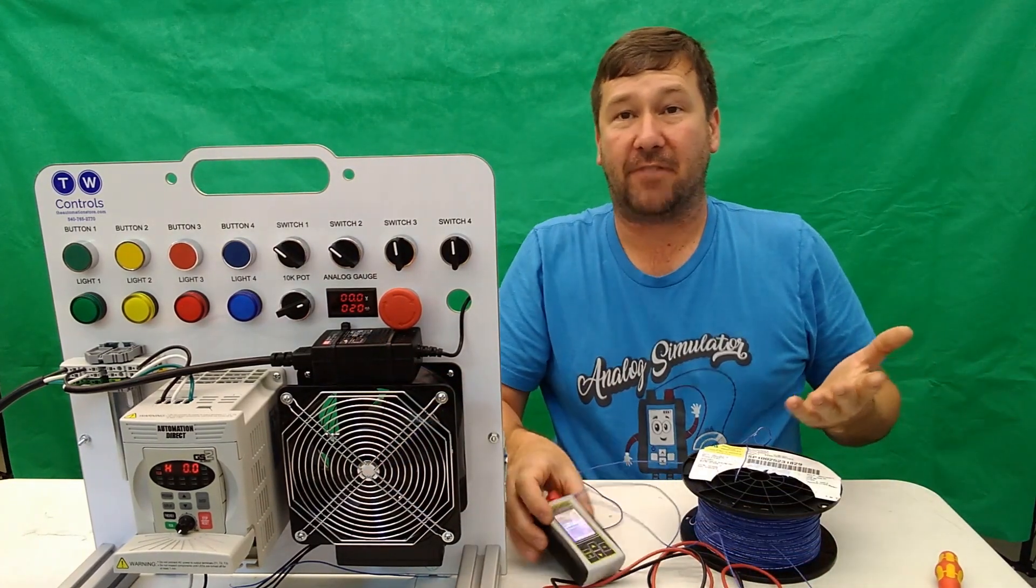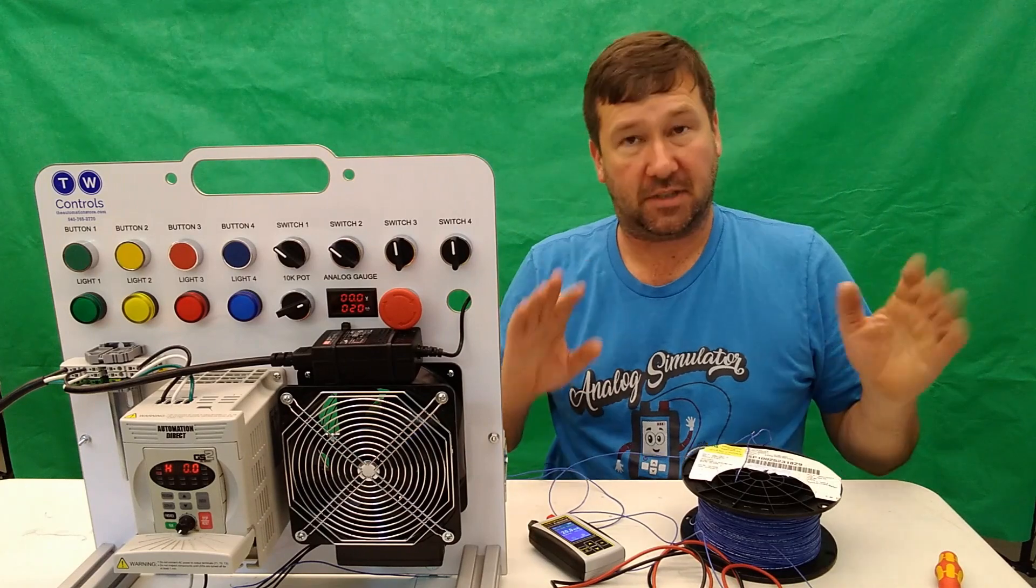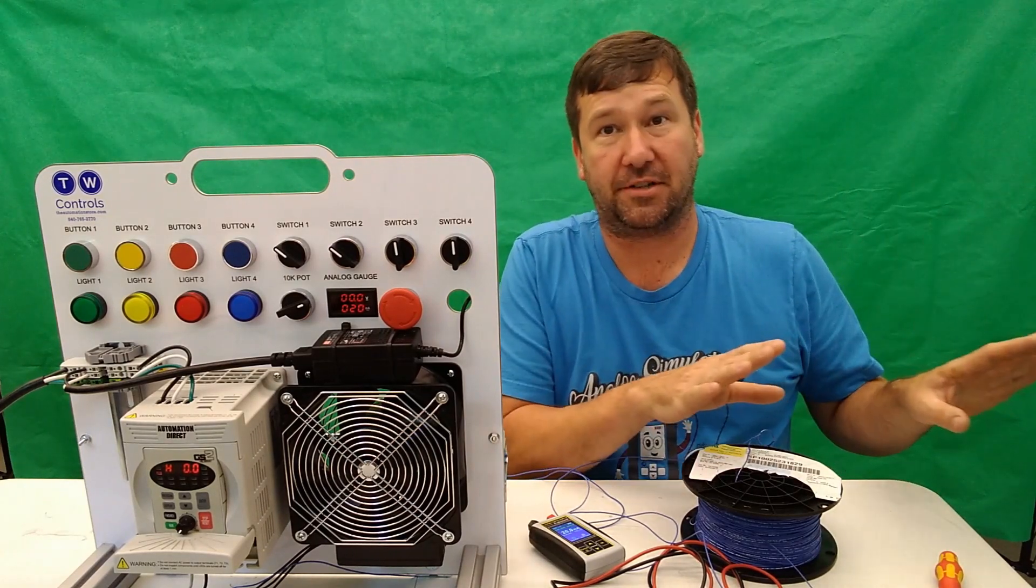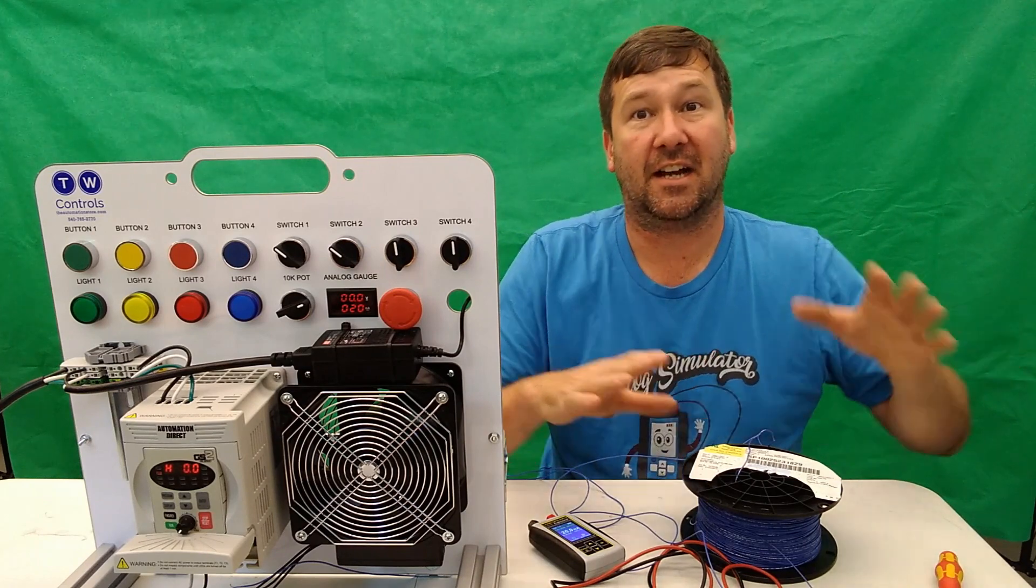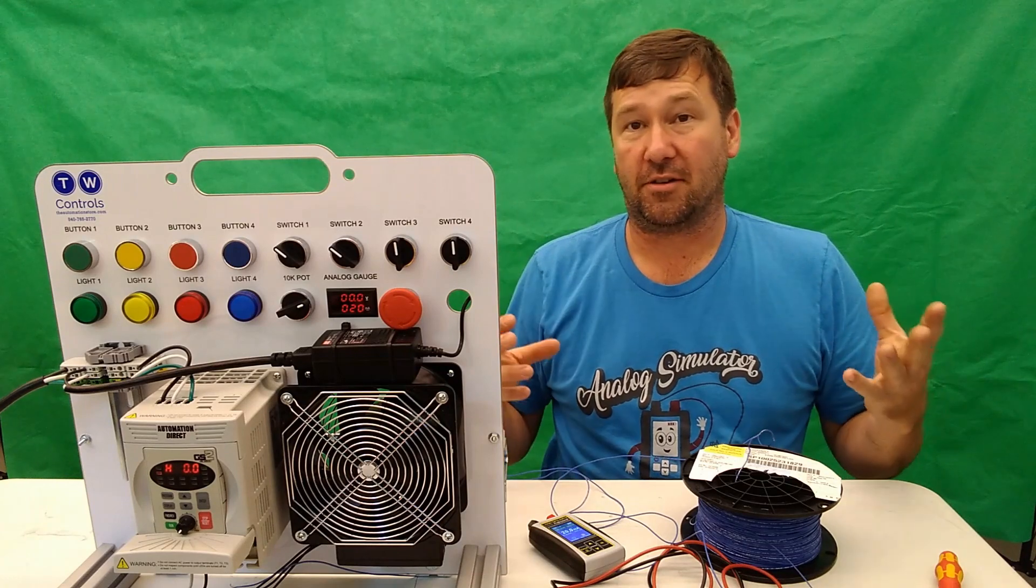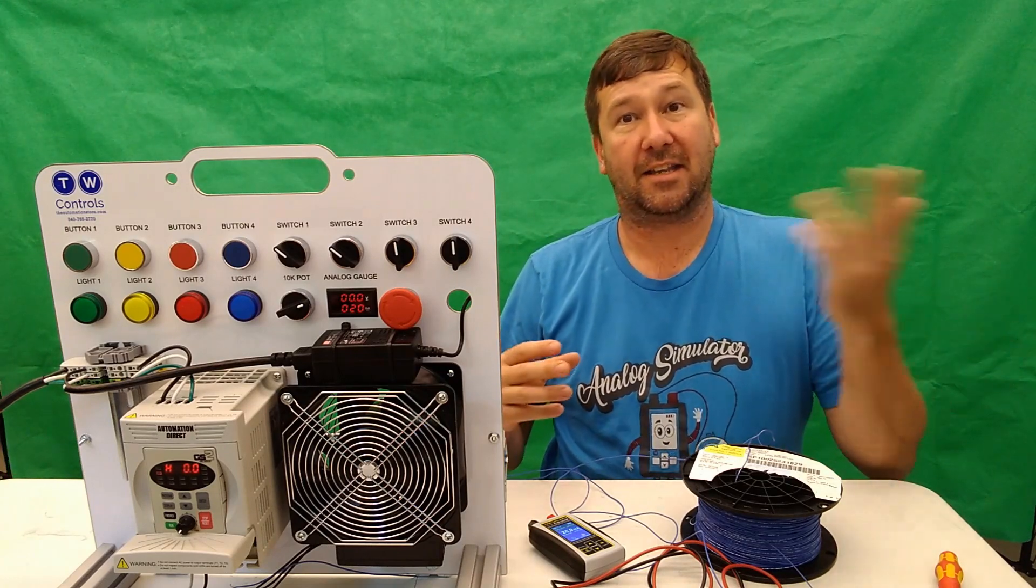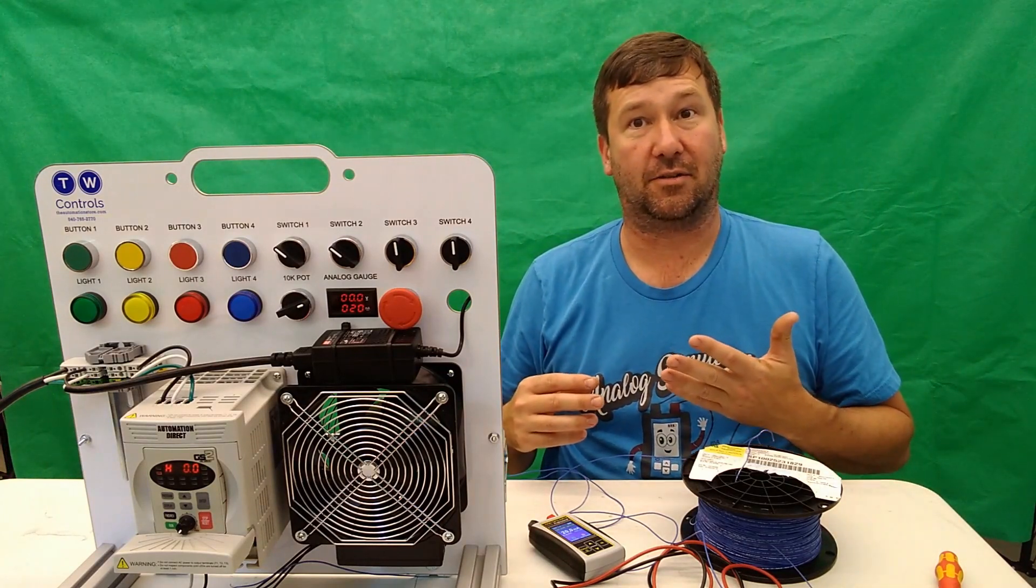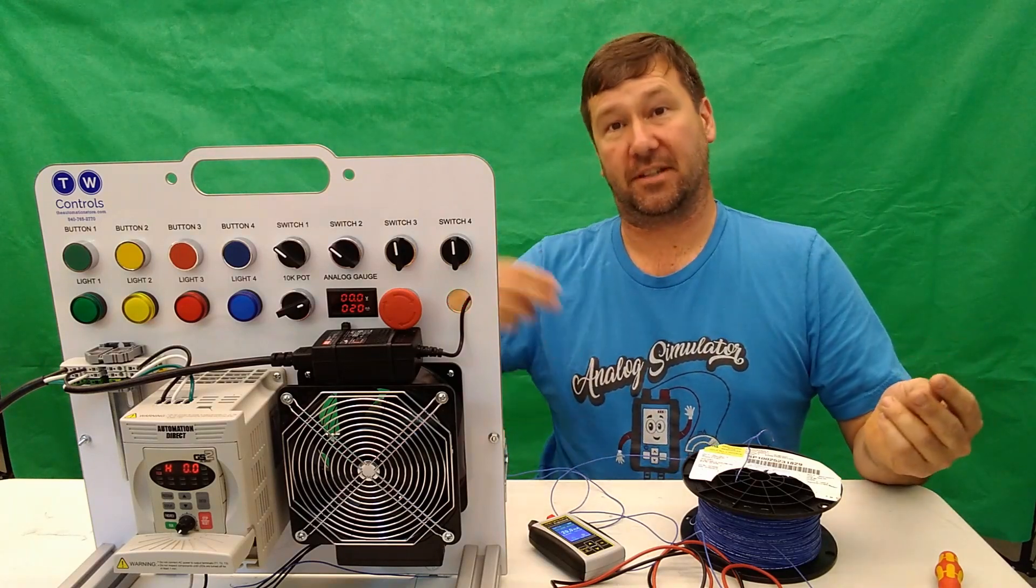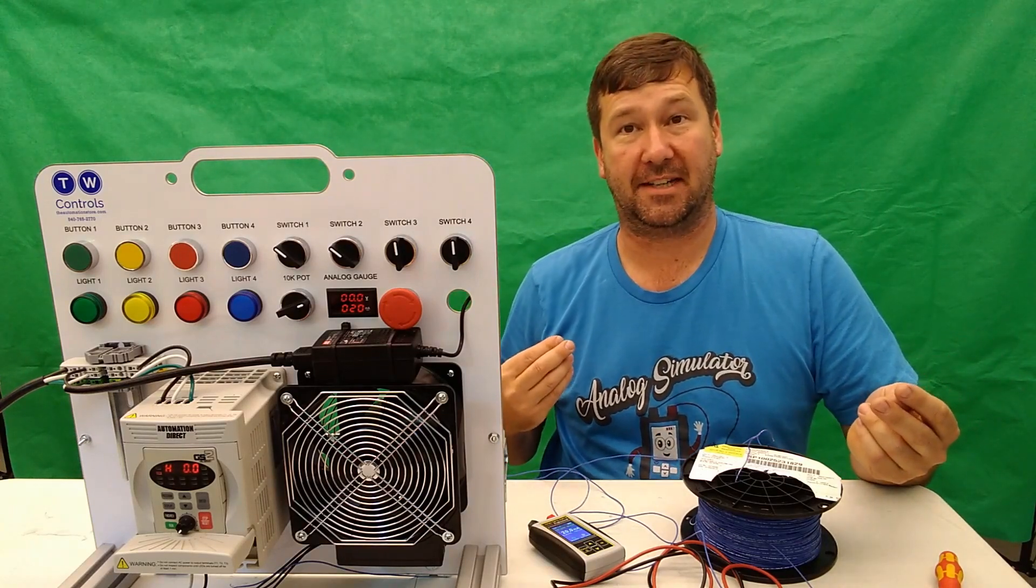And that's the advantage of a milliamp signal. With the exception of leakage current and things that we'll address in the troubleshooting section of this series, milliamps in equals milliamps out. So as long as your load is not too high that it can't drive the signal, you'll have the same signal at your instrument that you're going to have at your PLC input.